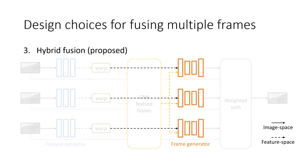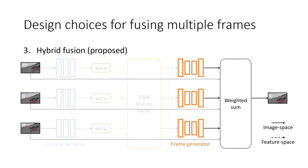We concatenate the fused feature map and the warped feature for each neighboring frame to form the input for our frame generator. The frame generator learns to predict a target frame and a confidence map for each neighboring frame. Finally, we adopt an image space fusion to merge all the predicted target frames according to the predicted weights to generate the final stabilized frame.